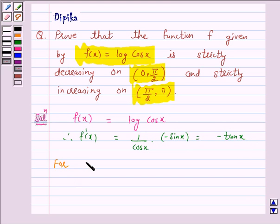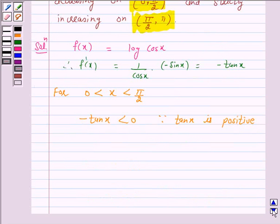Now, for 0 < x < π/2, tan x is positive in the first quadrant. Therefore, -tan x is negative. Therefore, f'(x) < 0.